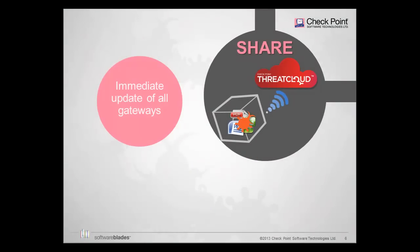In the final step, newly discovered threats are fingerprinted with signatures, IP addresses, and domains, and sent to the ThreatCloud. Once the threat information is in ThreatCloud, it is instantly available to protect other gateways.